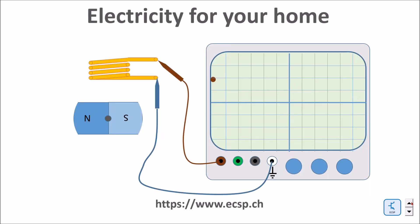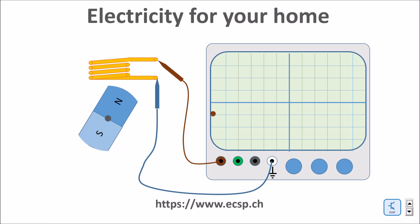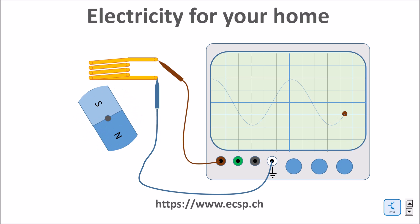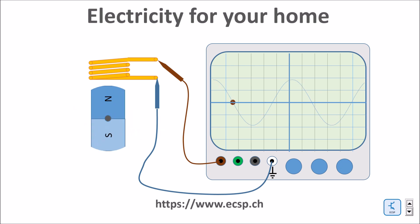Still today, the bulk of electric power is generated by rotating generators. The generator is driven by a turbine — it could be a water or a steam turbine. The generator consists of a magnetic rotor. If a metal coil is mounted close enough to the rotating magnet, a voltage will be induced in the coil.